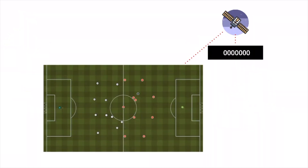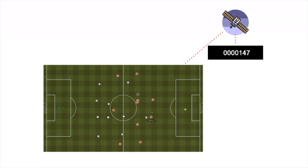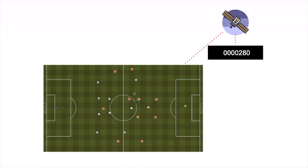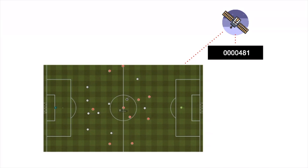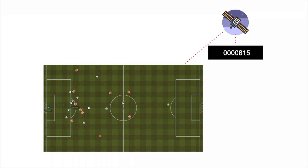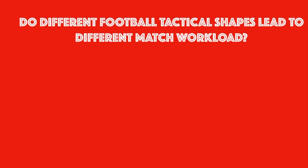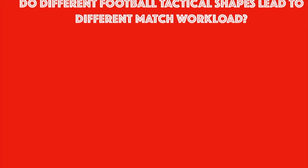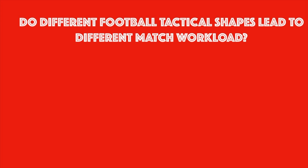Since GPS was introduced, physical data became more and more important within the clubs. For example, they are fundamental to having the knowledge to train players physically according to the individual position match workload demands. A question comes to mind: do two different football tactical shapes lead to different match workloads?